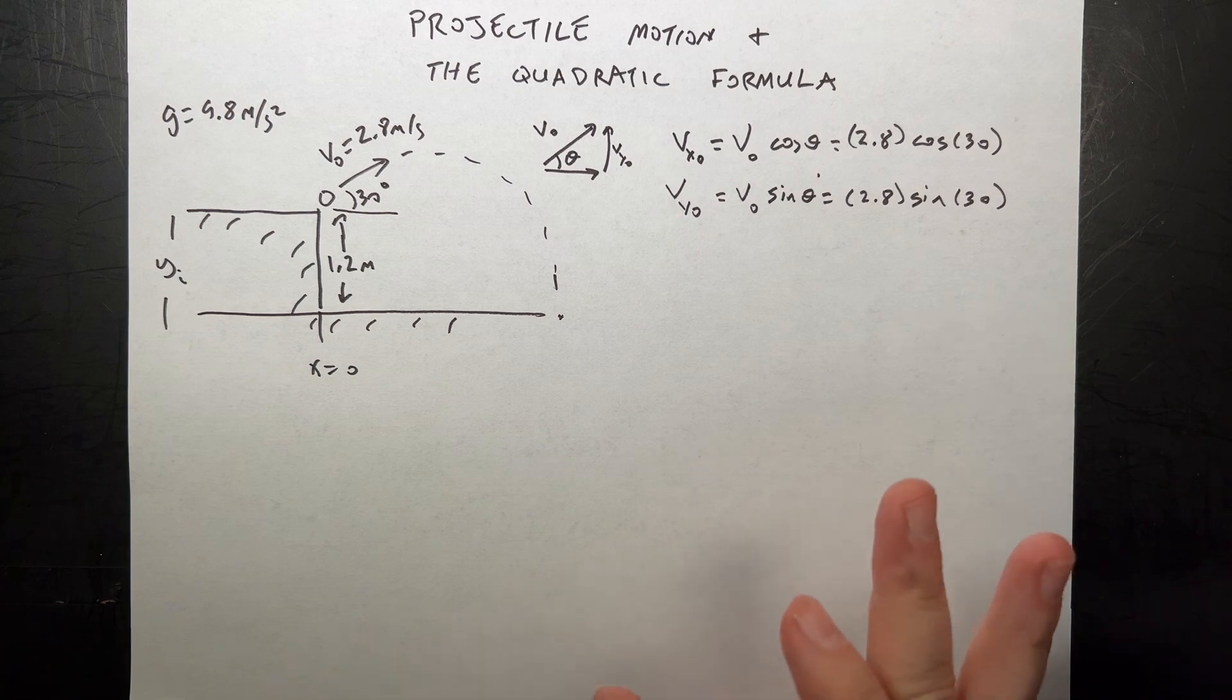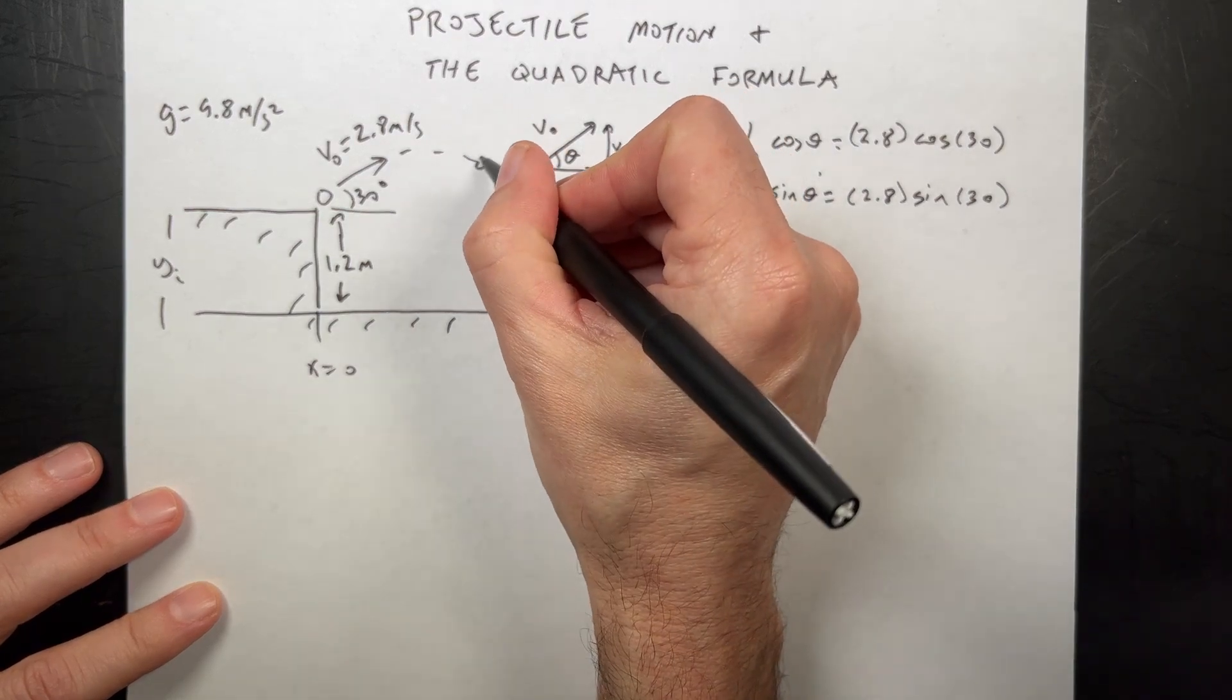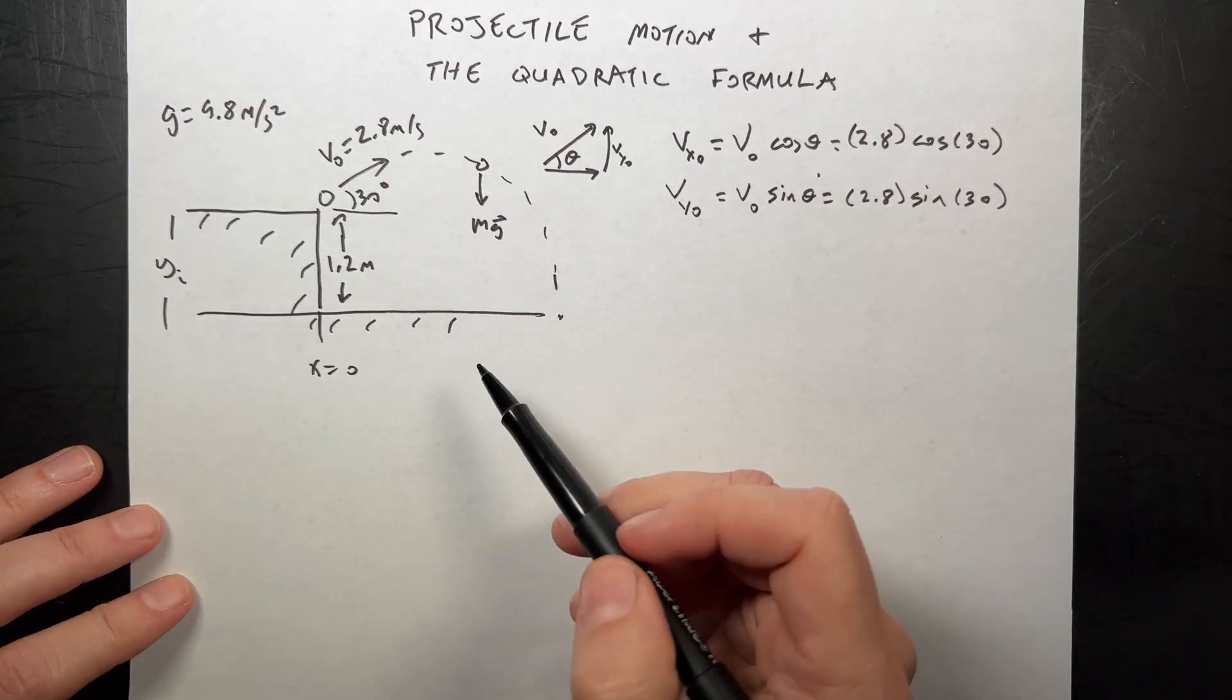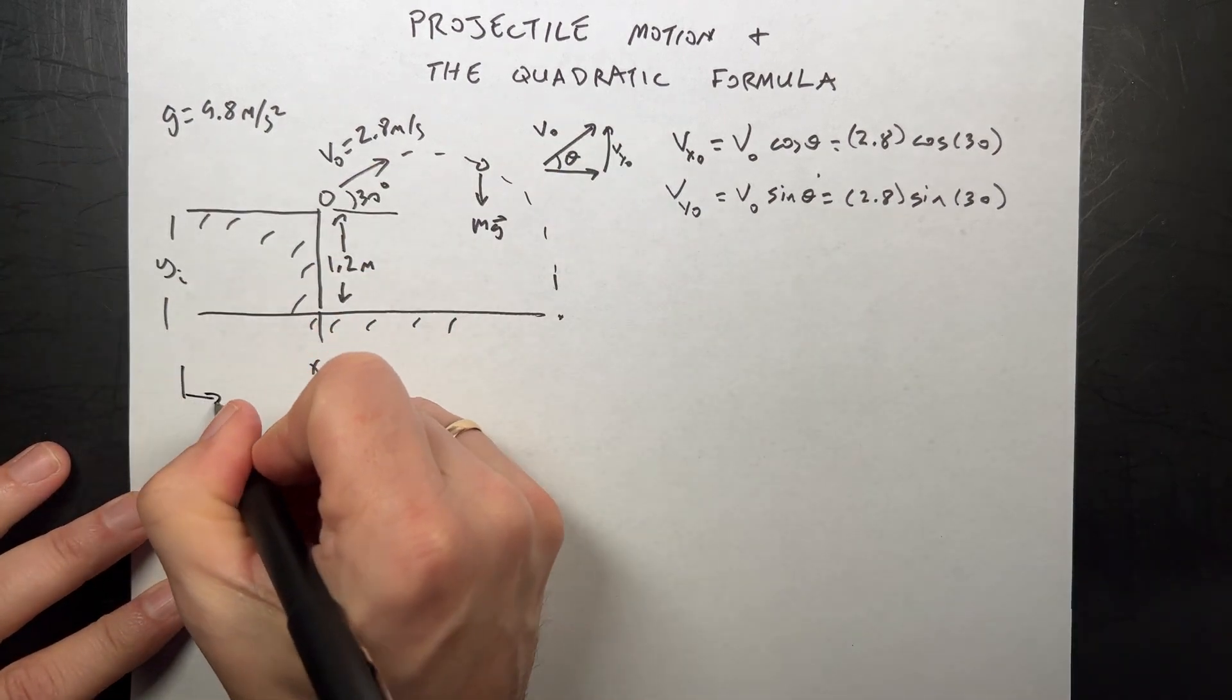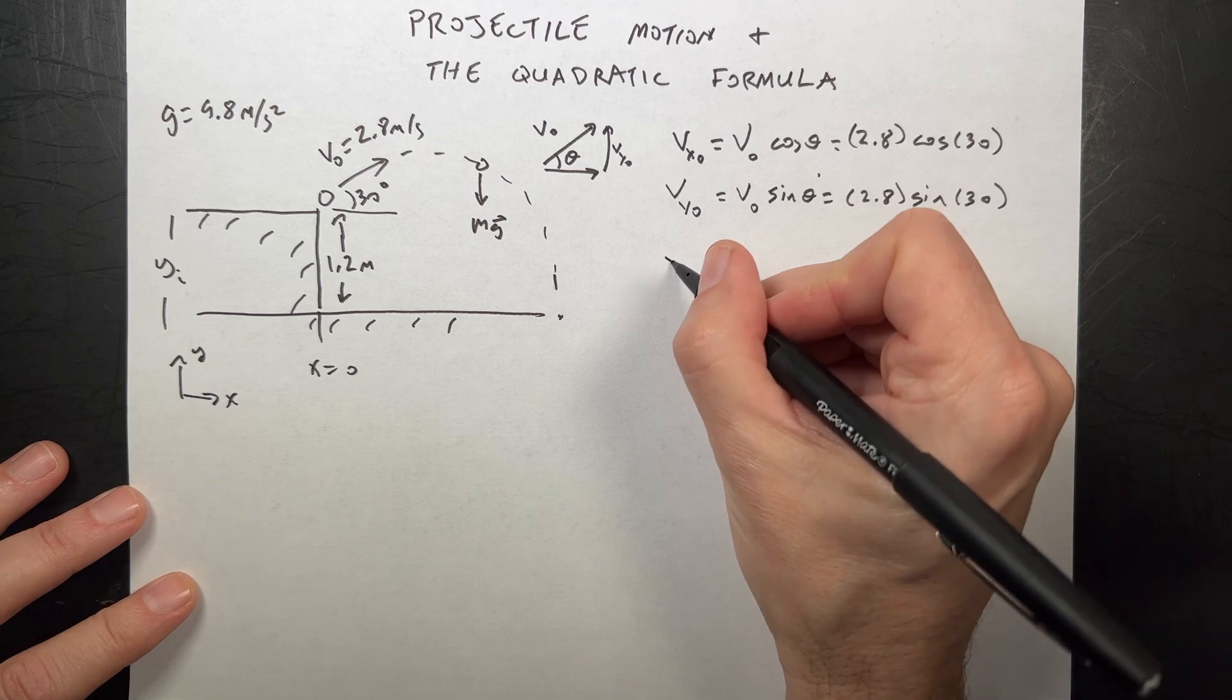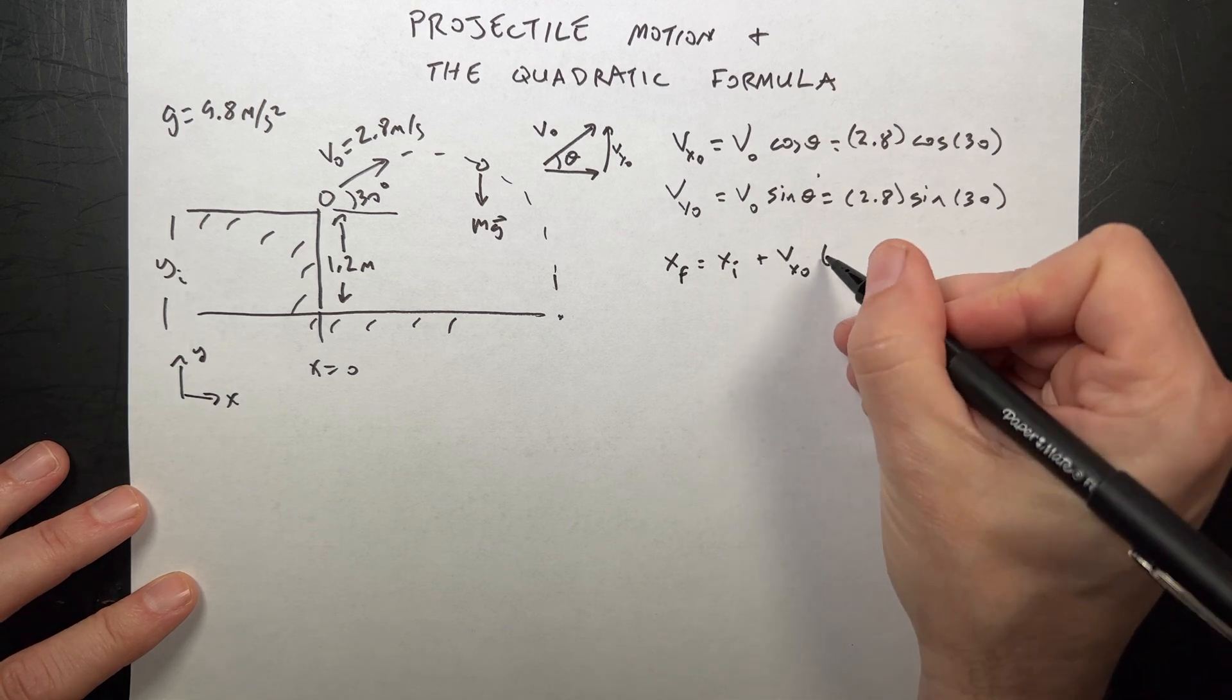Then I can find my vy0, my initial y velocity, which is v0 times sine of theta. That's 2.8 times sine of 30. If I look at the motion in the x direction, once it's in the air there's a downward gravitational force, a vertical acceleration. But in the horizontal x direction, there's no force. The acceleration is zero.